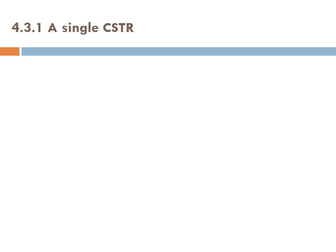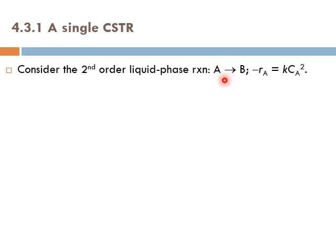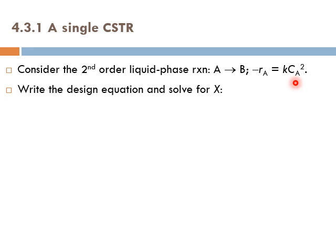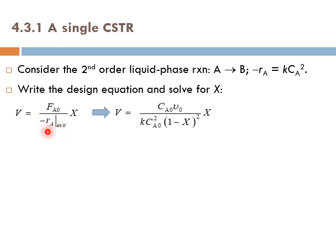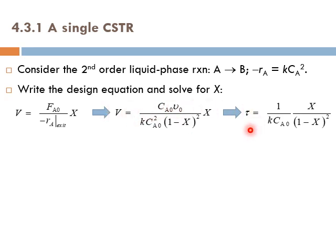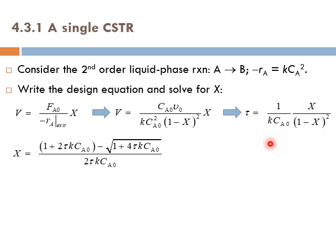Let's talk about a single CSTR. Consider a second-order liquid phase reaction A → B where −r_A = k·C_A². We write the design equation and solve for X. To solve for X, we substitute −r_A using the rate law and stoichiometry, replacing it with k·C_A0²·(1−X)². Dividing both sides by v-dot, we get τ equal to a corresponding expression, and then we solve explicitly for X.